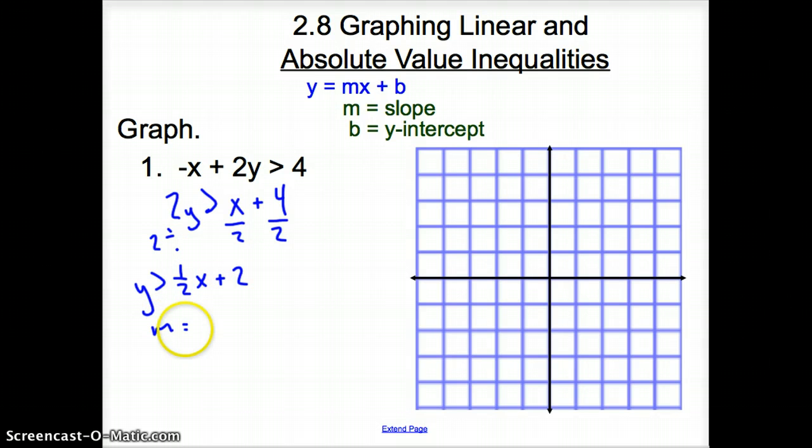So, then we have y is greater than 1 half x plus 2. My slope is 1 half. My y-intercept is 2. So, let's go ahead and graph this line. So, we go up 2, and now my slope is up 1 over 2. I rise up 1, I go over 2. Or, from the y-intercept, again, you could go down 1 over to the left 2 as long as we have a positive slope, as long as we're going up from left to right.